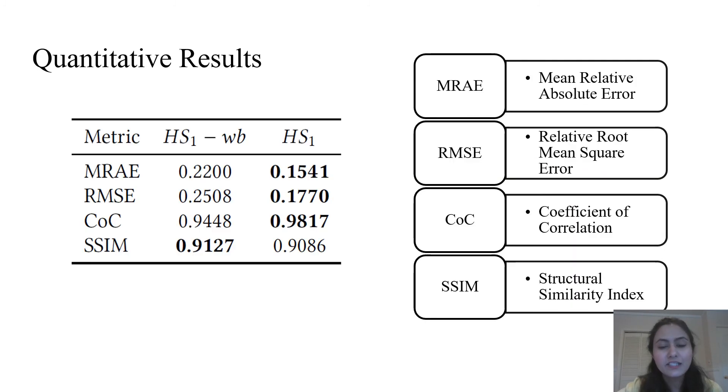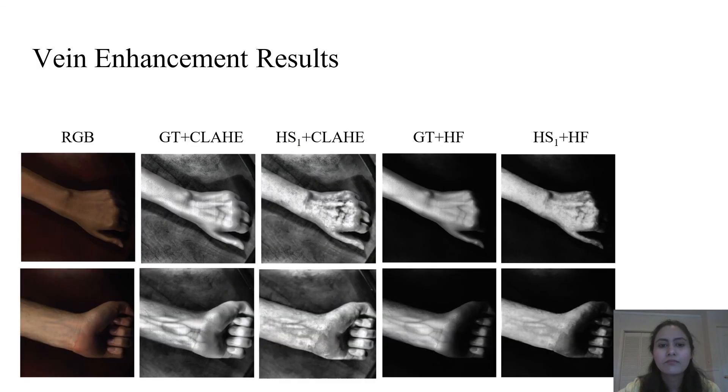Next, we do quantitative analysis. We compute all performance metrics using the testing dataset. The performance results show that the proposed model HS1 yields low error rates in terms of mean relative absolute error and root mean square error metrics and high accuracy in terms of correlation and structural similarity. Furthermore, we also evaluate the impact of white balancing on the performance of our model. The model HS1 using white balancing step performed better than the model without white balancing step in terms of lower error rate and high correlation. However, SSIM is better produced by a model without white balancing but it is still fairly high in both cases.